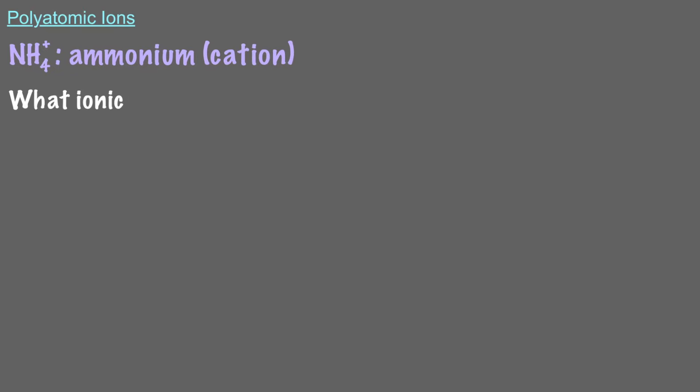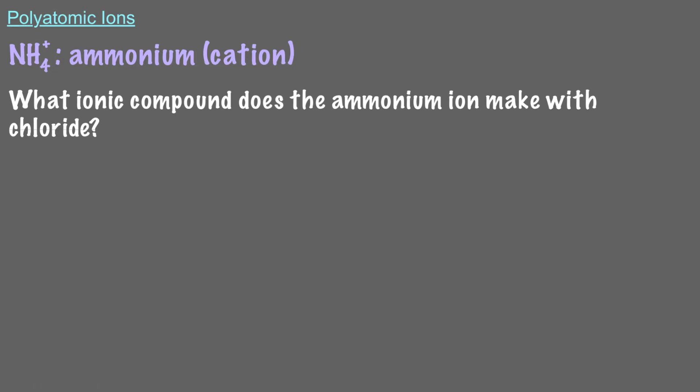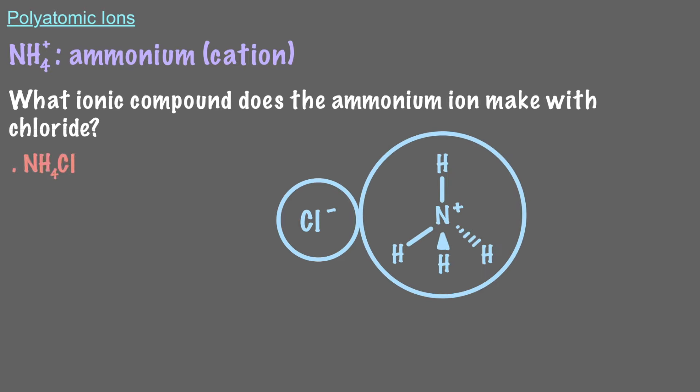What ionic compound does the ammonium ion make with chloride? That's right, since the chloride anion carries one single negative charge, we only need one ammonium ion and one chloride ion to create a neutral ionic compound, ammonium chloride.